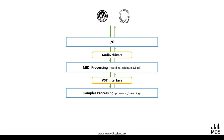VST allows decoupling the MIDI processor module from the samples processor module. For the first component, we need very high speed of data exchange and some good processing capability, which is typically built into the audio interface. For MIDI processing, it's important to have good CPU power, a lot of RAM, and good streaming with the hard disk. For samples processing, the most important thing is hard disk streaming, then RAM, and finally CPU.